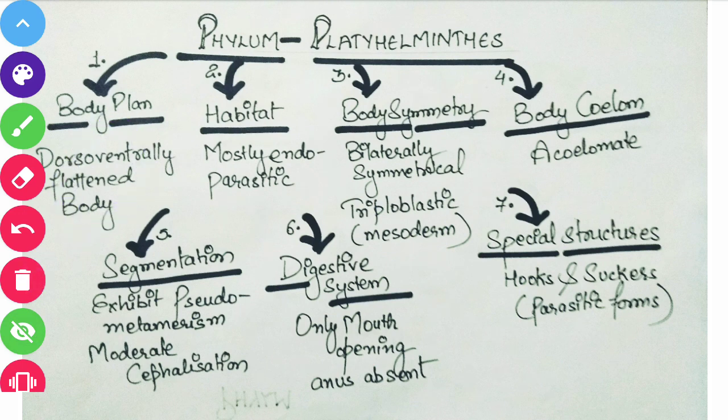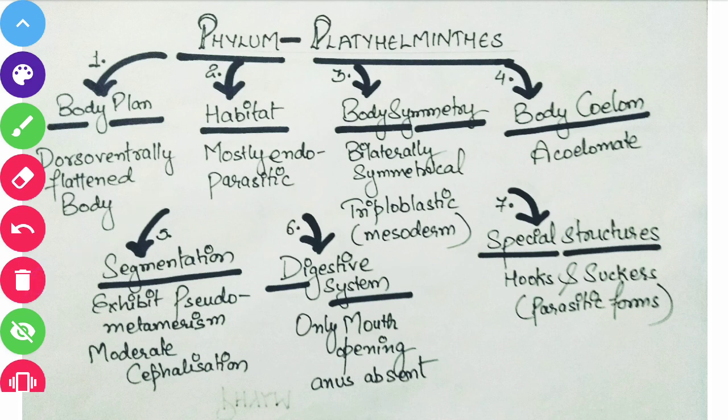You can see their body organization, their body plan — they have a dorsoventrally flattened body. Imagine a leaf which is flat from the dorsal surface as well as the ventral surface. So we can say they are dorsoventrally flattened. Coming to habitat, most of the organisms of this phylum are endoparasitic.